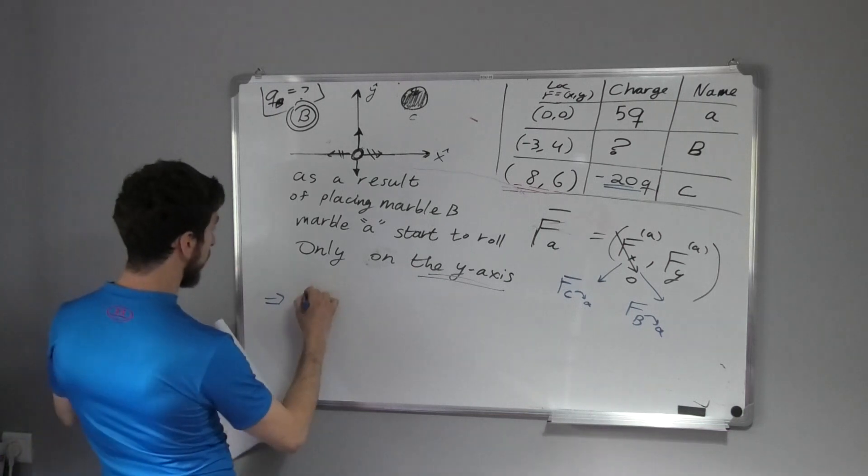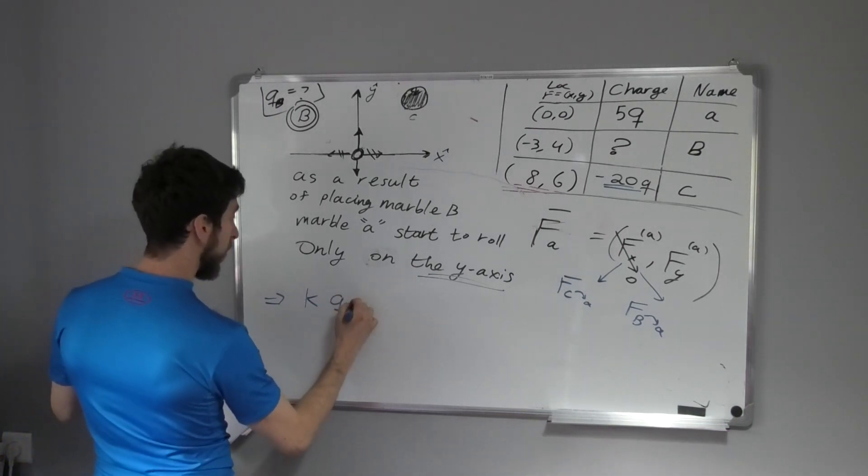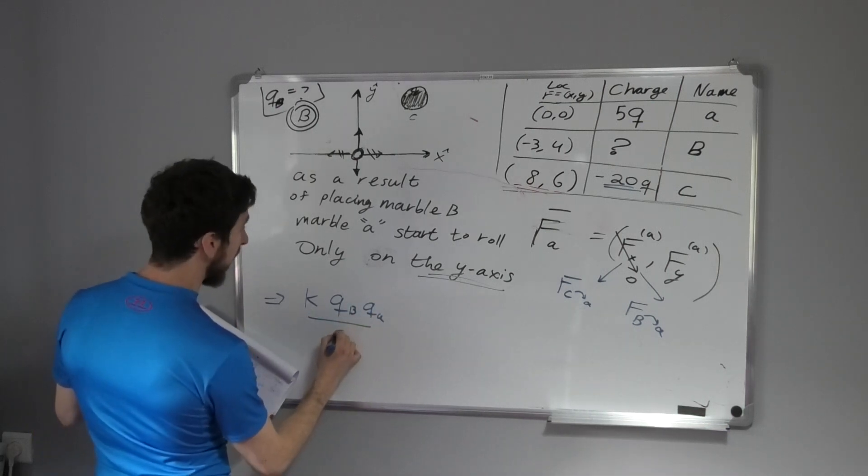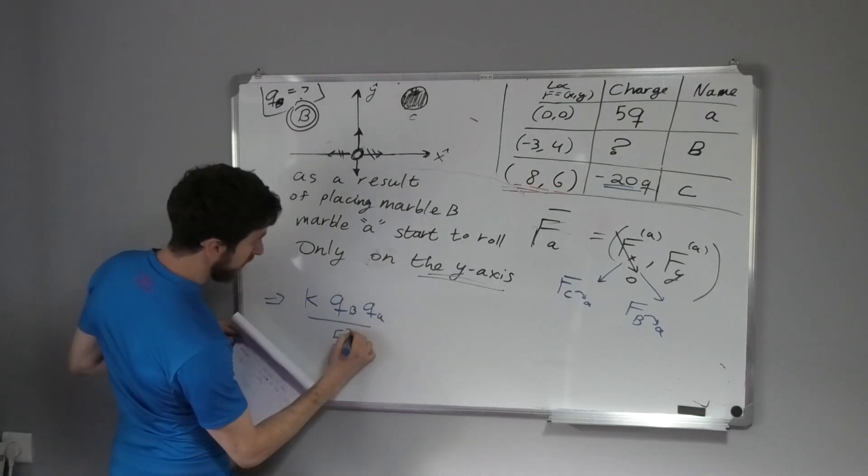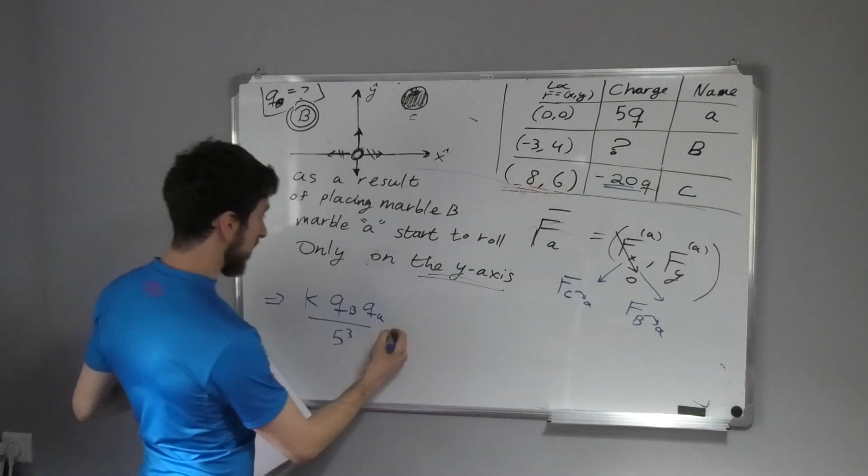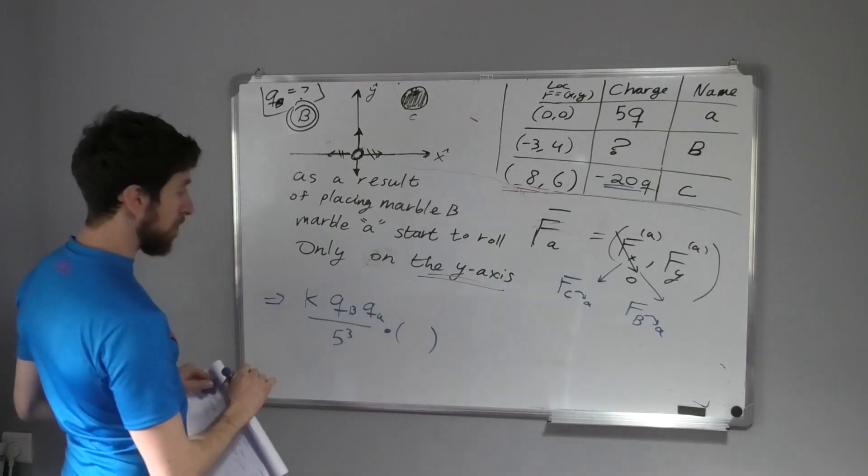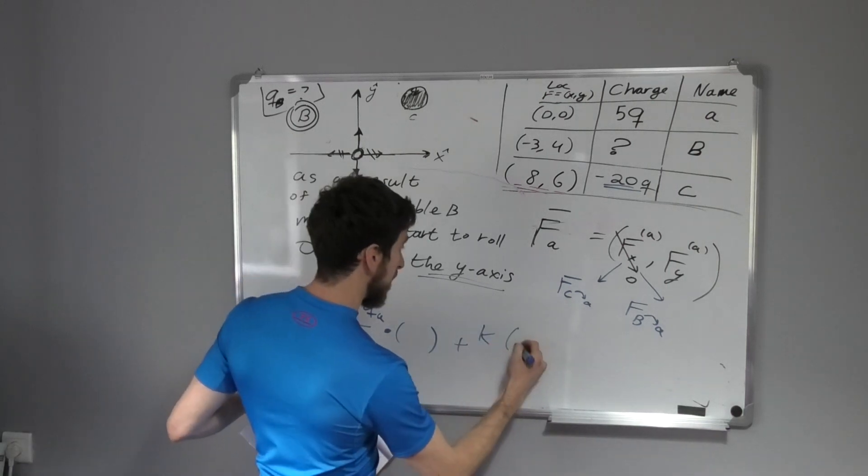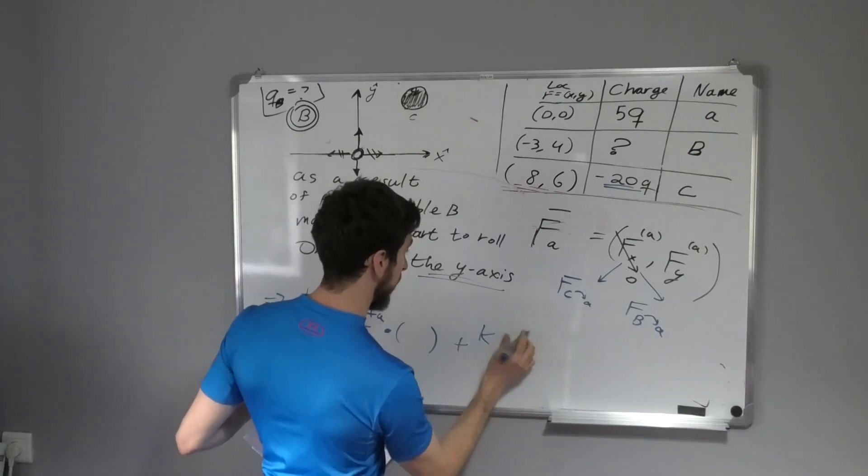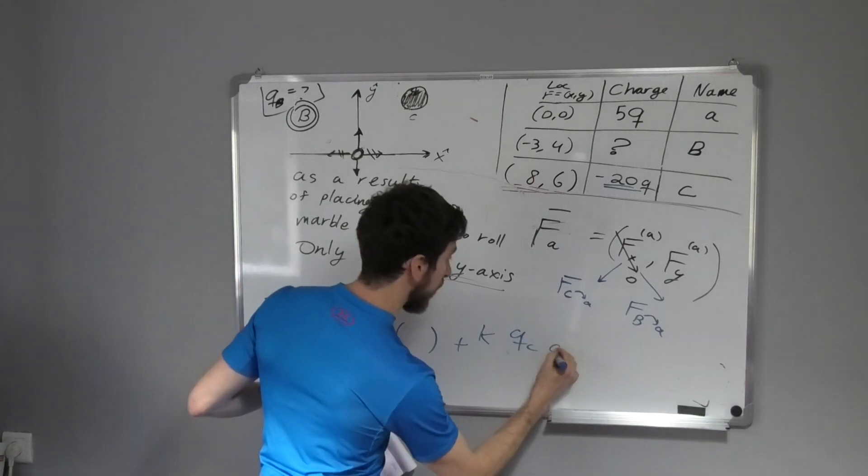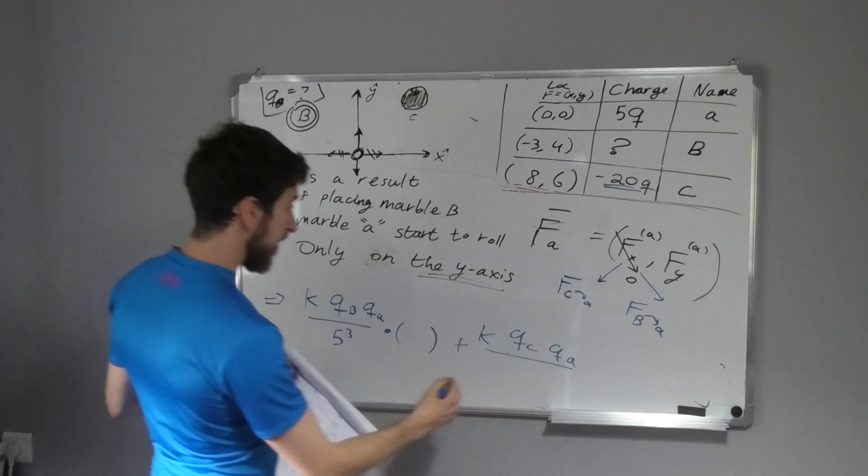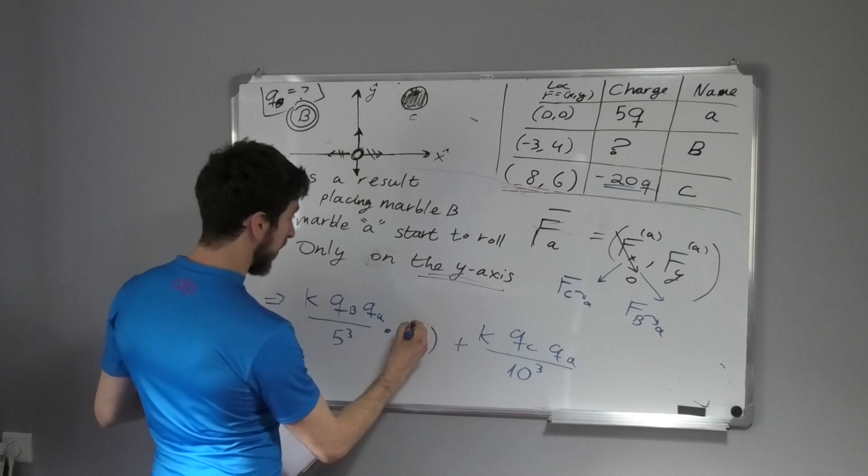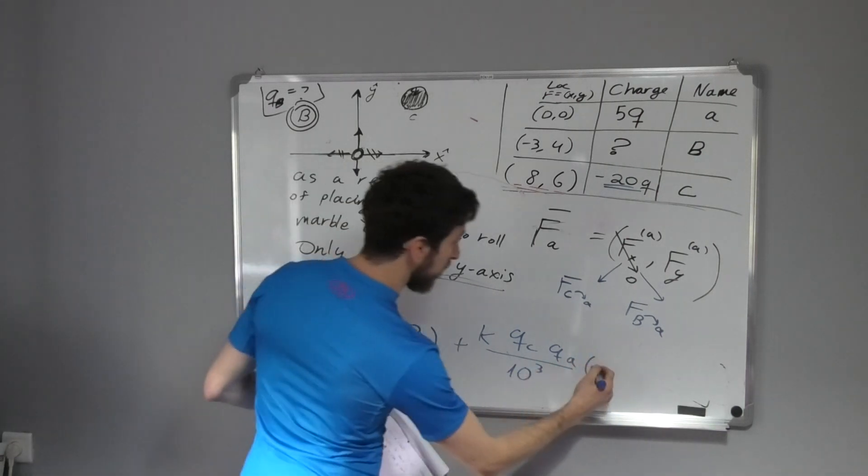Let's put it into the equation. We know that the force is K QB QA divided by the magnitude of the vector, which you already calculated, which is 5 to the 3. We have here the x-component of the direction, plus K QC QA over 10 to the 3. This is 3 and this is -8.